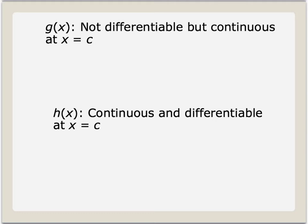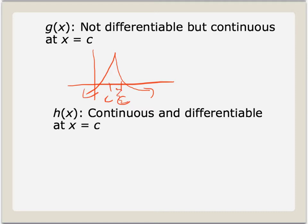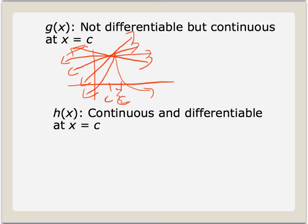Now I'm going to ask you to graph a function that's not differentiable but continuous at x equals c, and then one that's continuous and differentiable at x equals c. Pause the video and try this out. For continuous but not differentiable, the only way that's going to happen is via a cusp. I'll put x equals c and draw a cusp there. This is not differentiable because it has an infinite number of tangent lines — I can draw many different tangent lines there and don't know which one it is.